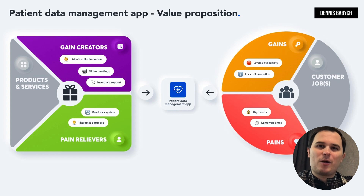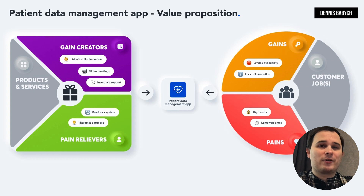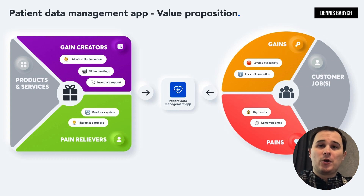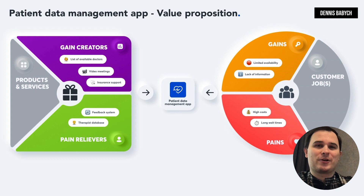Once you've identified these problems, that's when your web or mobile platform comes into play. You can provide solutions such as a comprehensive therapist database that allows users to easily find available options, a reliable feedback system, a list of doctors currently available for house calls or video meetings, and an insurance program that helps users save money. When you prioritize the most significant value for your audience and keep that at the core of everything you do, you're setting up your business for success. Small companies and startups can easily outperform industry leaders by being agile, flexible, and focusing on unique and local niches.